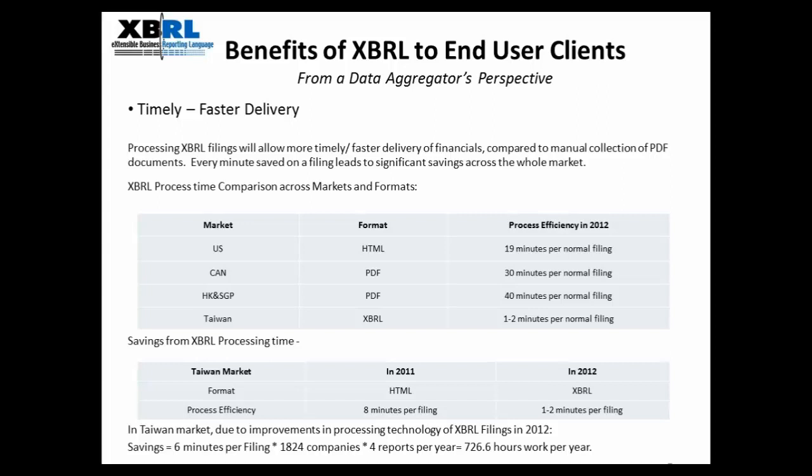We did a comparison for the Taiwan market. In 2011, we processed HTML filings for the Taiwan market and it took us about eight minutes per filing. In 2012, when we used the XBRL filings, the time was reduced to one to two minutes per filing. This meant that we saved six minutes per filing for the Taiwan market when we used XBRL. Six minutes per filing may not sound too much, but when you extrapolate this across the entire market, we saved about 727 working hours in a year, and this is very significant.